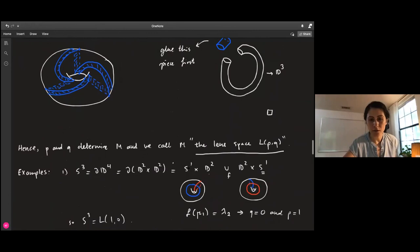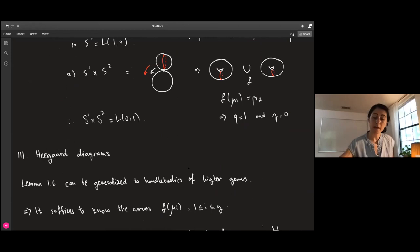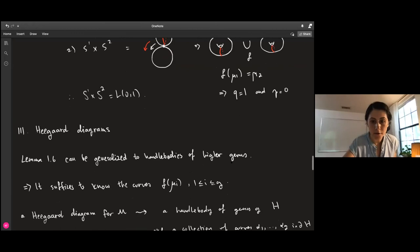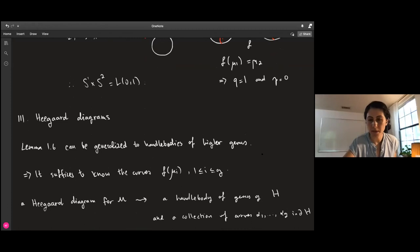This gives us something called Heegaard diagrams, where we describe a three-manifold by taking a handlebody and drawing the curves that are the images of the meridians in either handlebody.